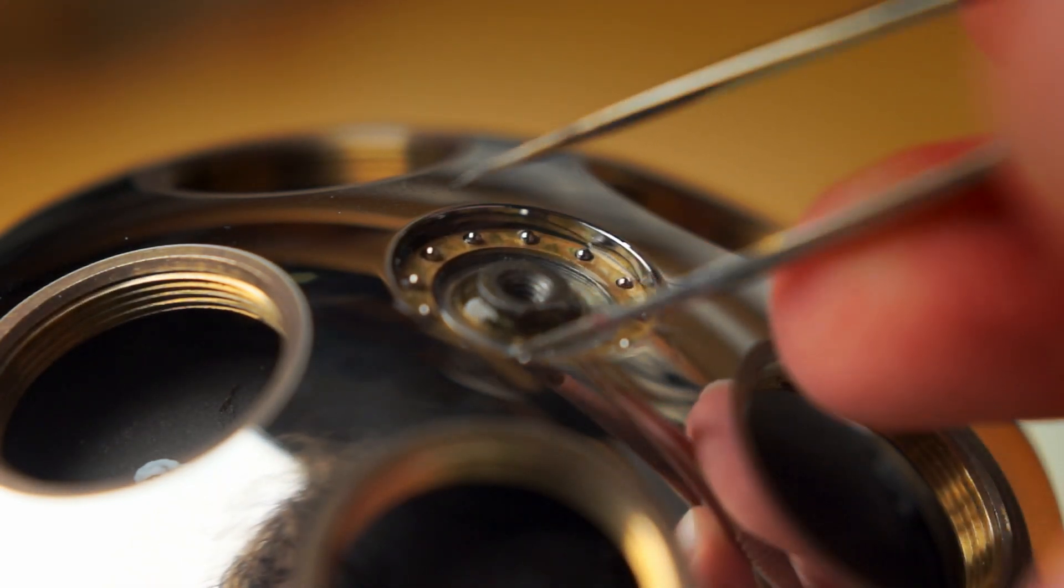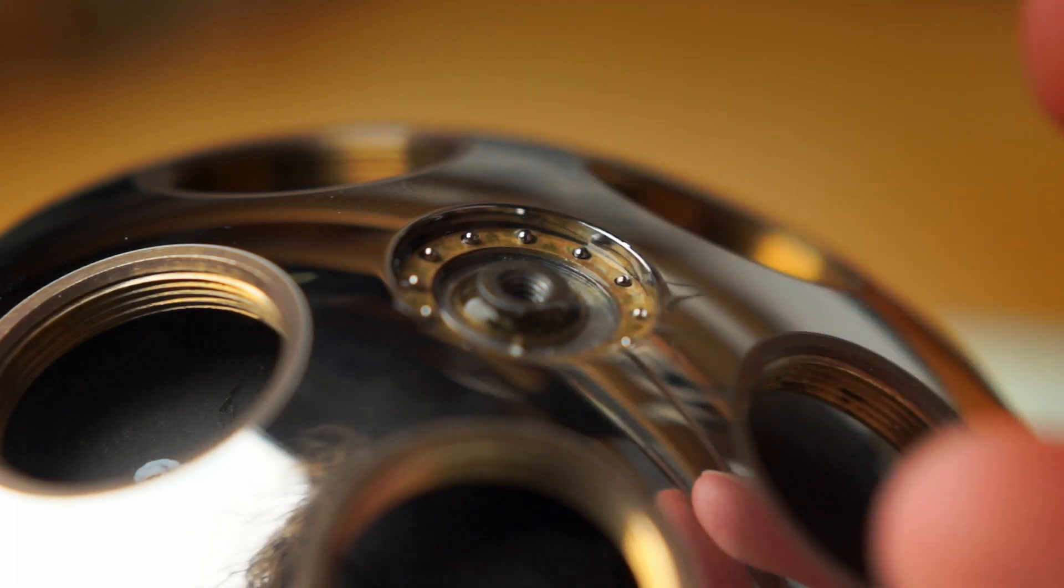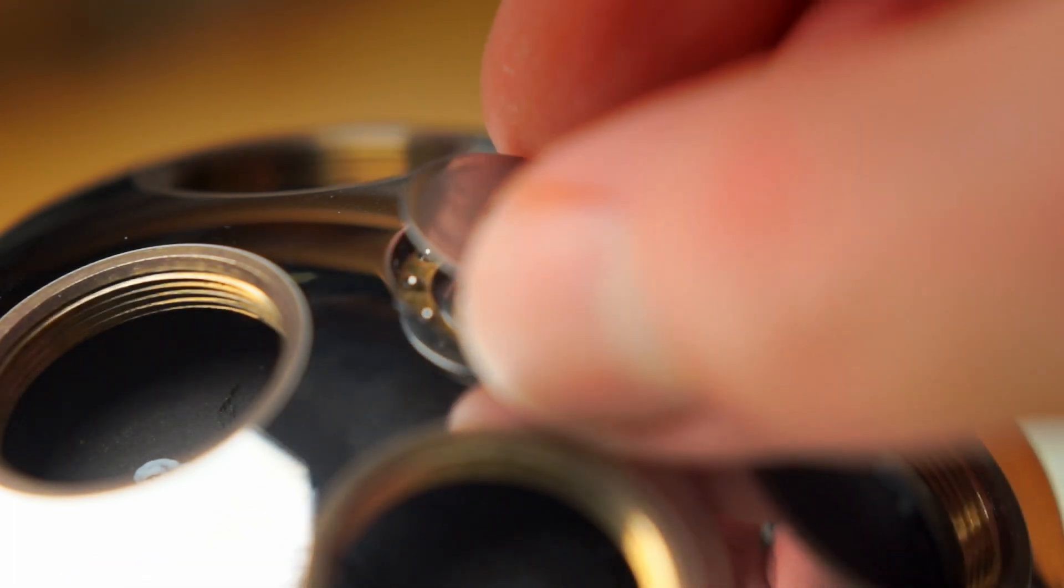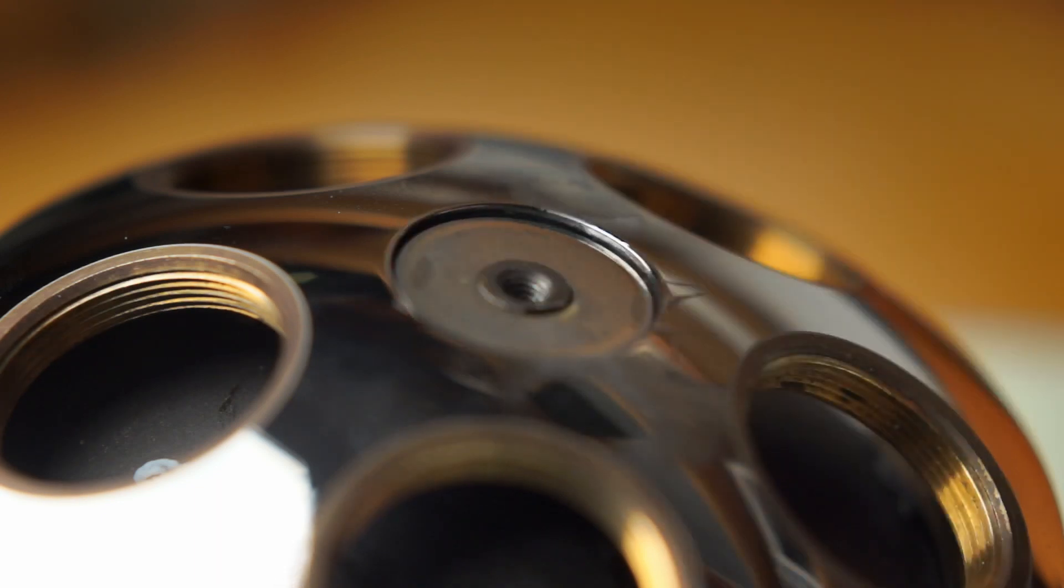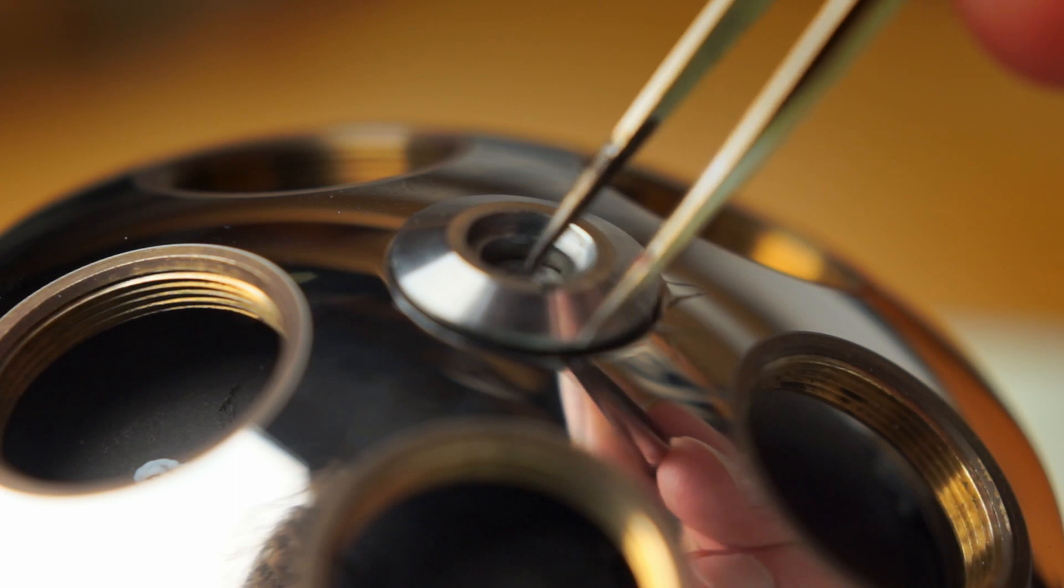One notable difference here is the upper race of the upper bearing. As with all bearing races, it was greased and then replaced. Then the washer is replaced and the locking screw tightened.